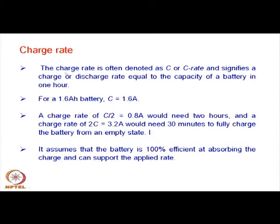The C-rate assumes the battery is 100% efficient at absorbing the charge and can support the applied rate. If you charge at a very fast rate — 2C, 10C, or 20C — you are charging or discharging very quickly and the kinetics may not support it, potentially leading to breakdown of the structure. The criteria for testing a battery includes how fast it can be discharged and recharged, giving parameters for the rate of charging and discharging.